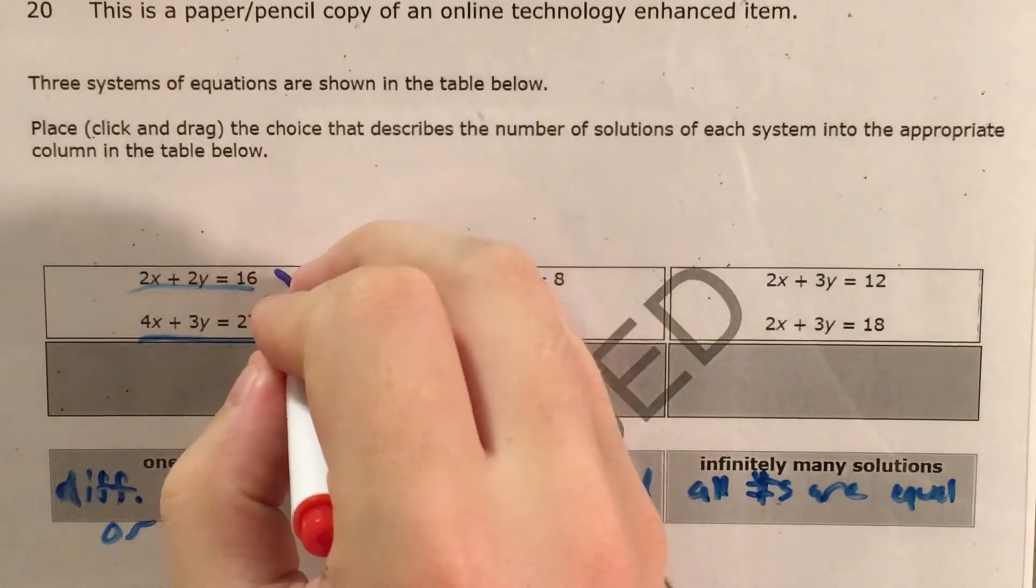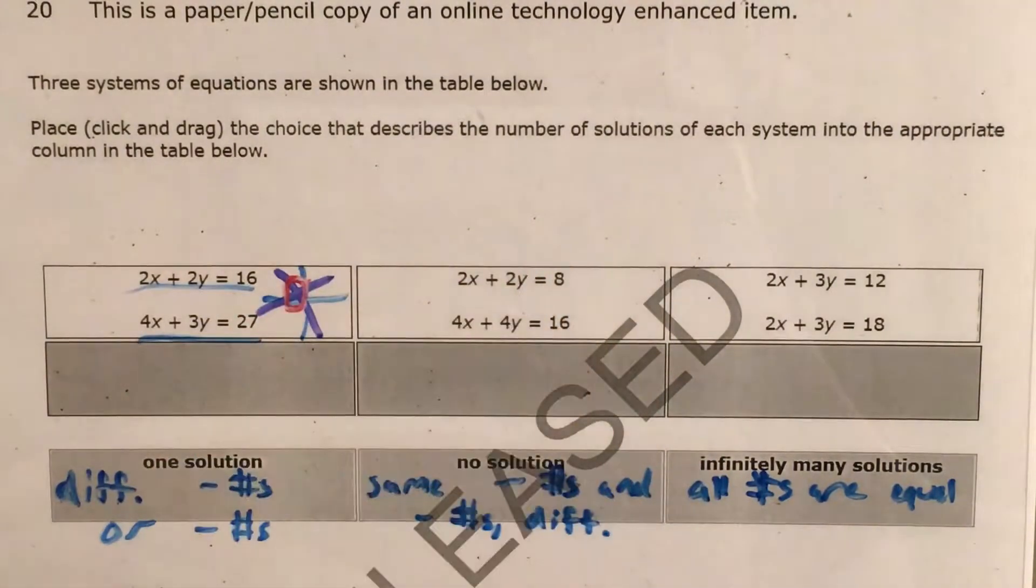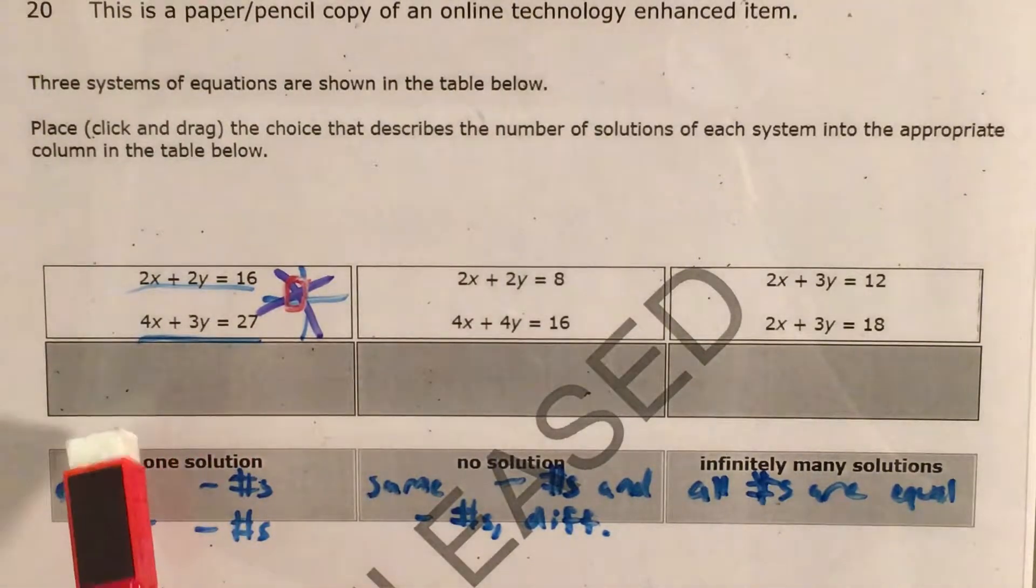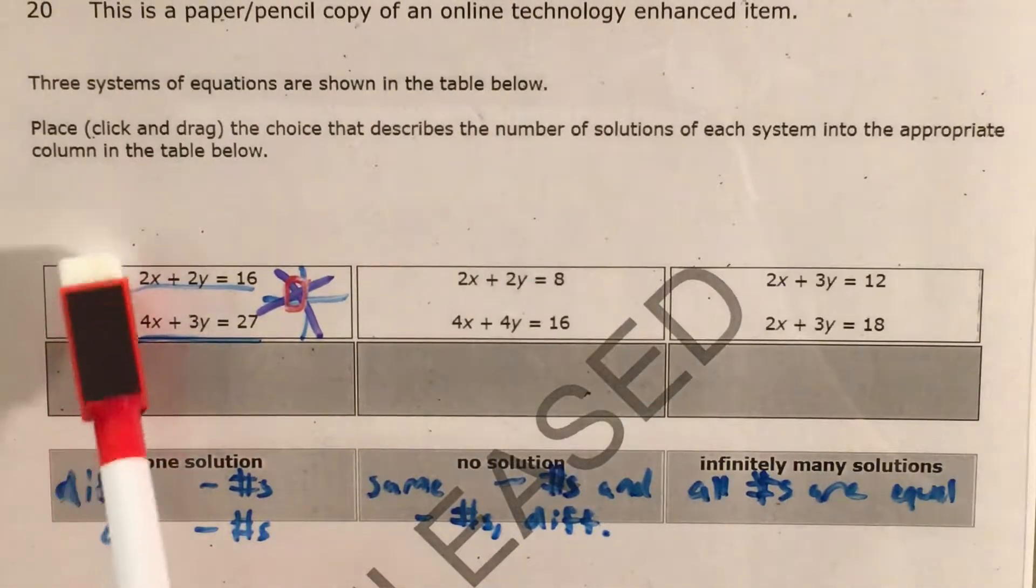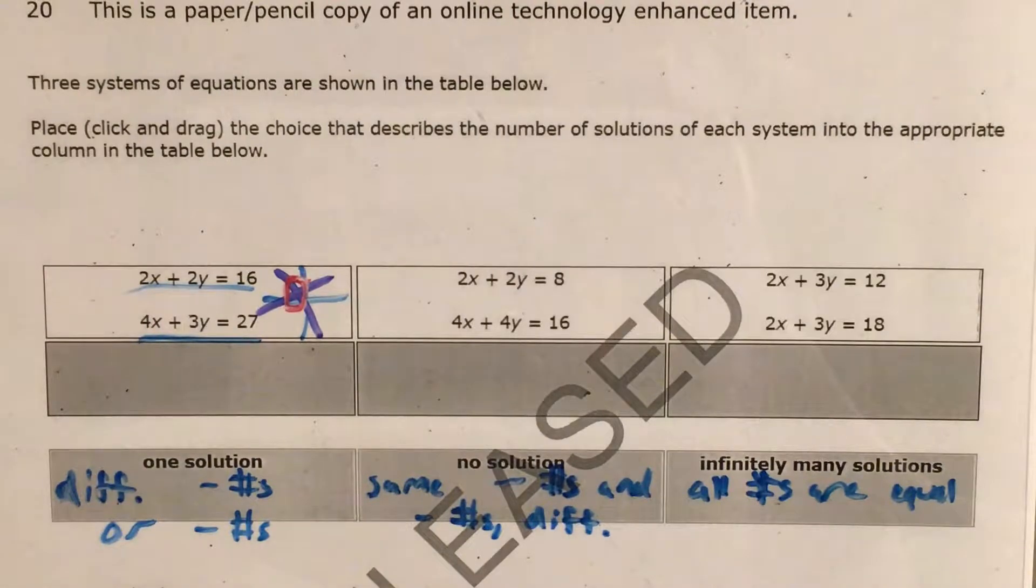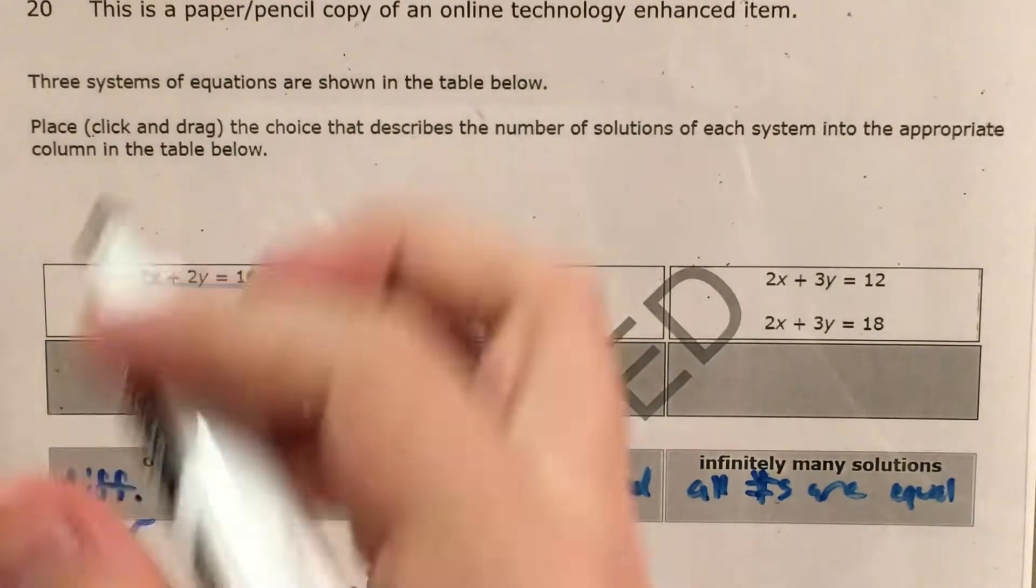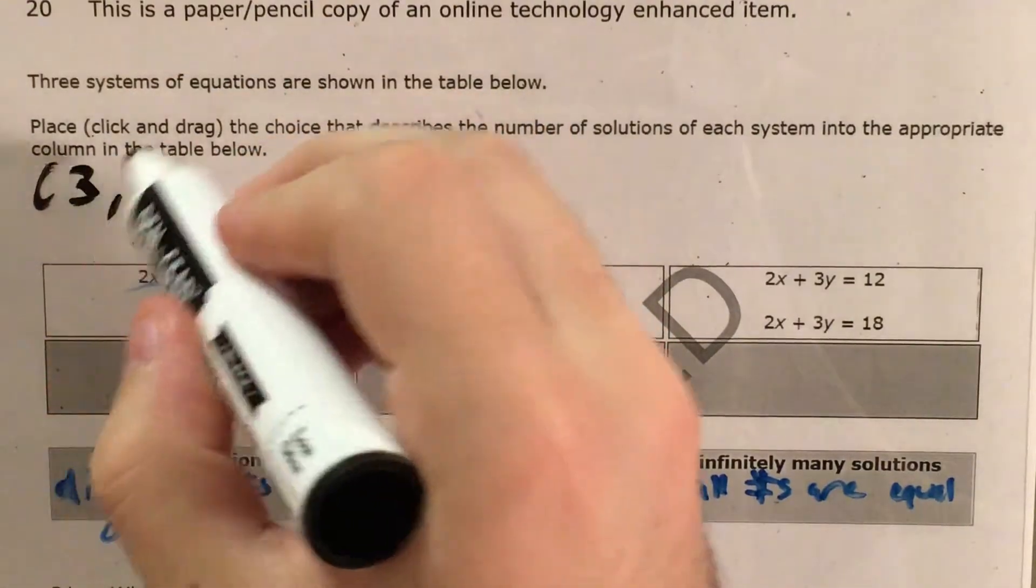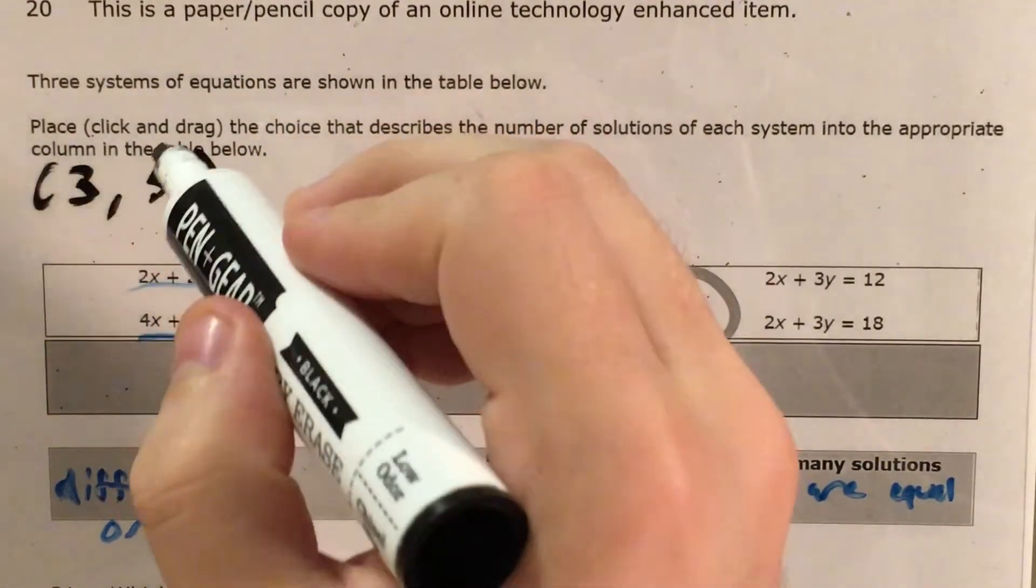And then the solution would be the place where those two lines would intersect, so right there. Now that is a very rough sketch of something that probably is not even remotely close to these. But as an example of a solution, I actually went ahead and figured out the solution for this system. It's actually where x is 3 and y is 5.